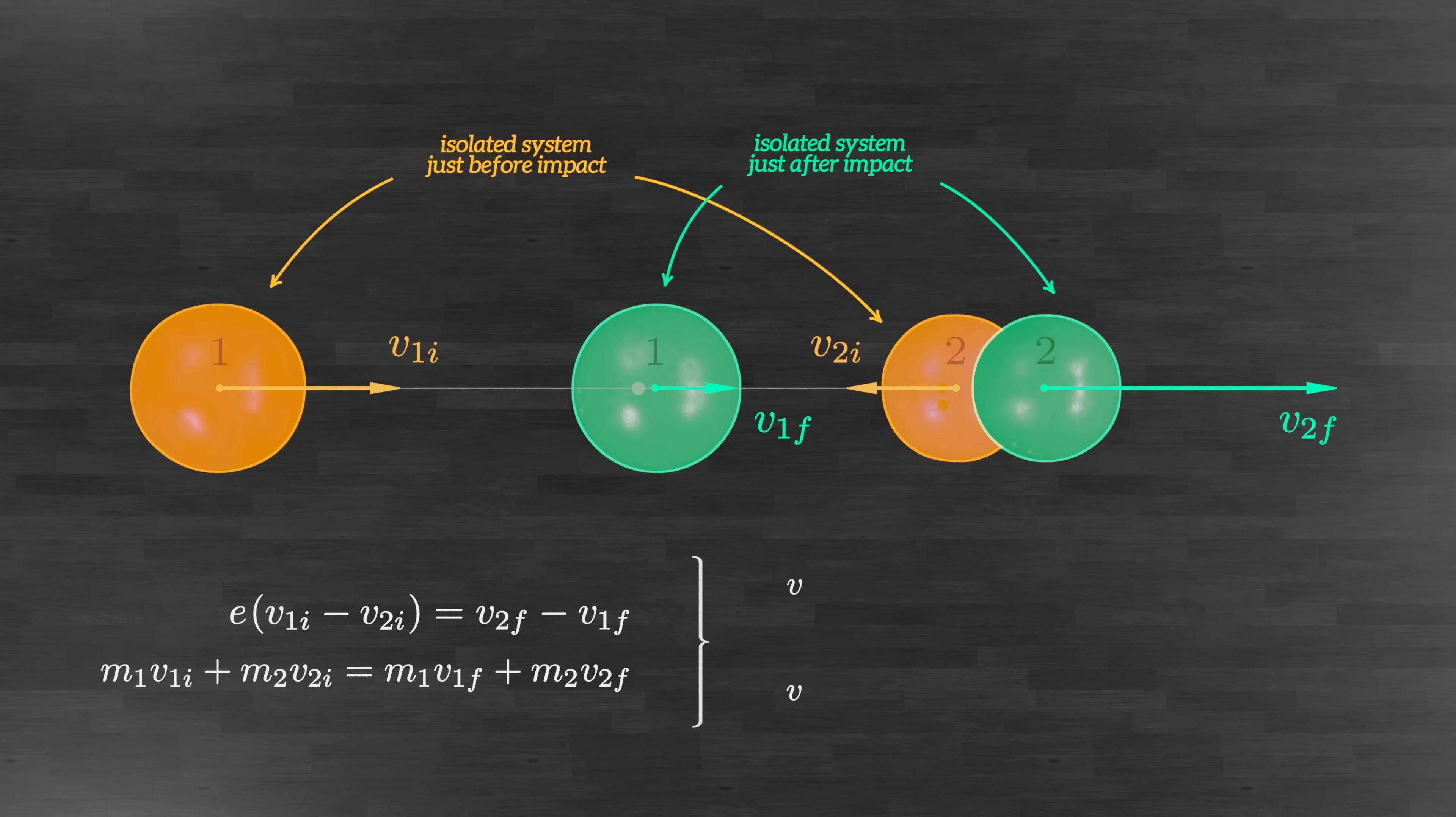Unlike the car crash scenario we looked at earlier, which was a perfectly inelastic collision where the two objects stuck together after impact, we can't solve this problem using conservation of momentum alone. In collisions where the objects don't stick together, there are multiple ways the total initial momentum can be distributed between the two objects after impact. The coefficient of restitution gives us the additional information needed to obtain a unique solution for the final velocities.